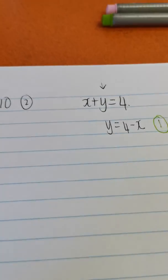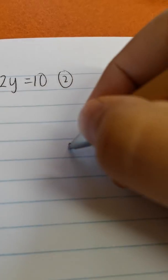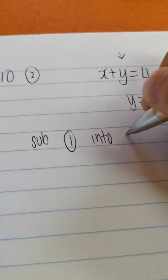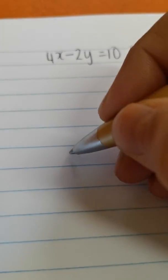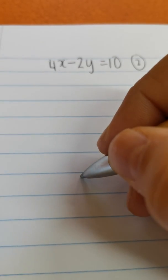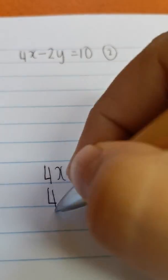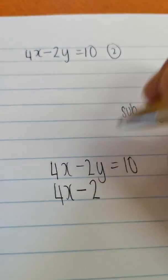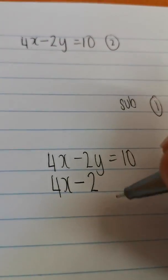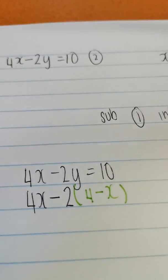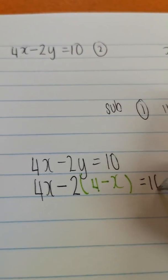And then I'm going to name this equation 2. So now I'm going to say sub equation 1 into equation 2. Equation 2 is 4x minus 2y equals 10. 4x minus 2. Every time I see a y, I'm going to replace it with 4 minus x. 4 minus x equals 10.